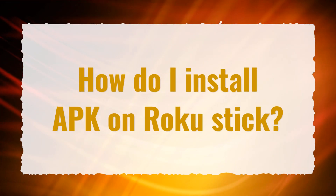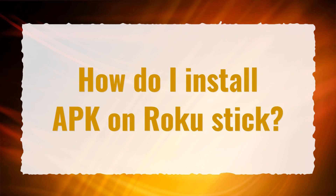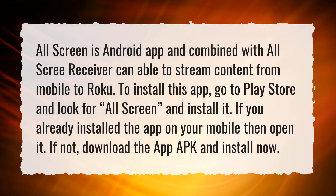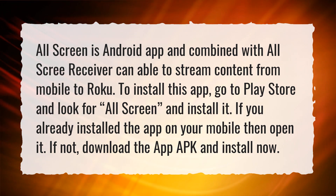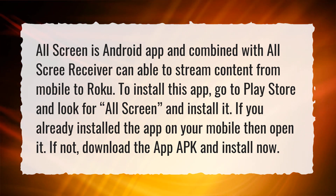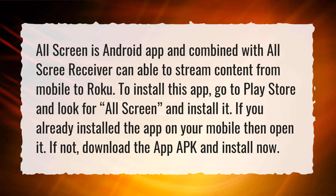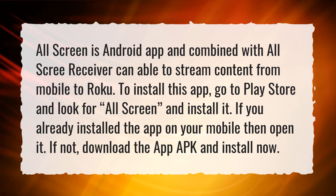How do I install APK on Roku Stick? AllScreen is an Android app and combined with the AllScreen receiver, it can stream content from mobile to Roku. To install this app, go to the Play Store and look for AllScreen and install it. If you already have the app on your mobile, open it. If not, download the app APK and install it now.